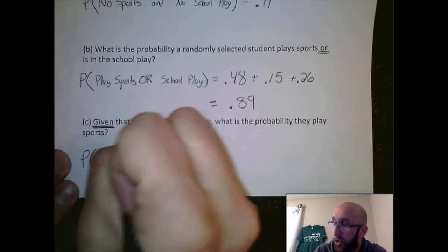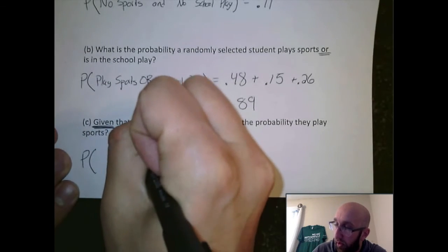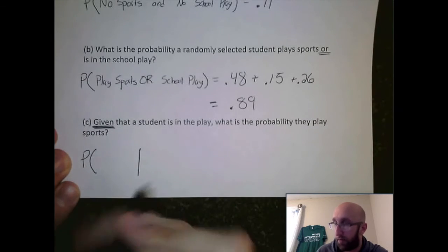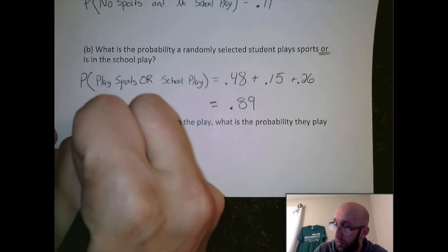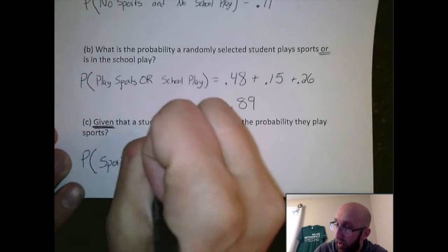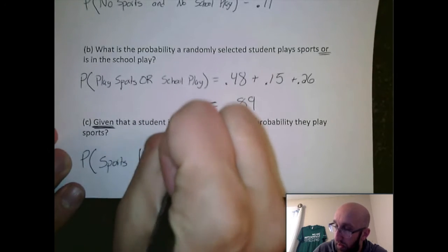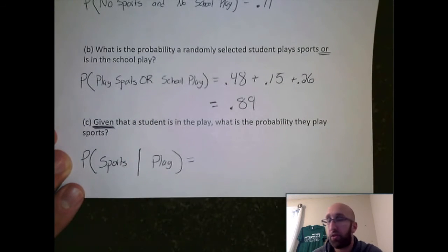So notation here, we're going to have this symbol which represents given. We want to know the probability that they do sports given they are in the play.